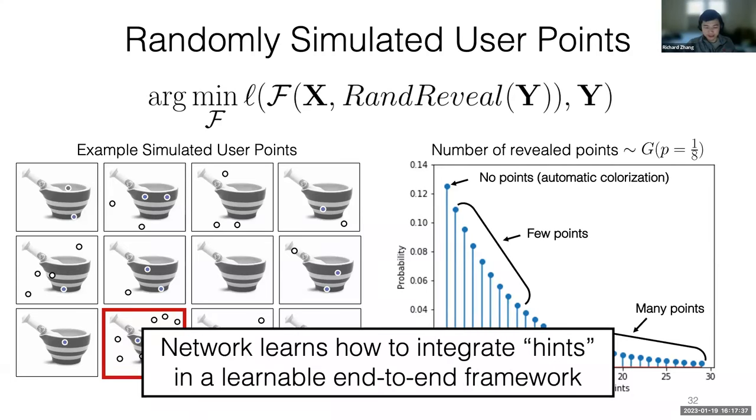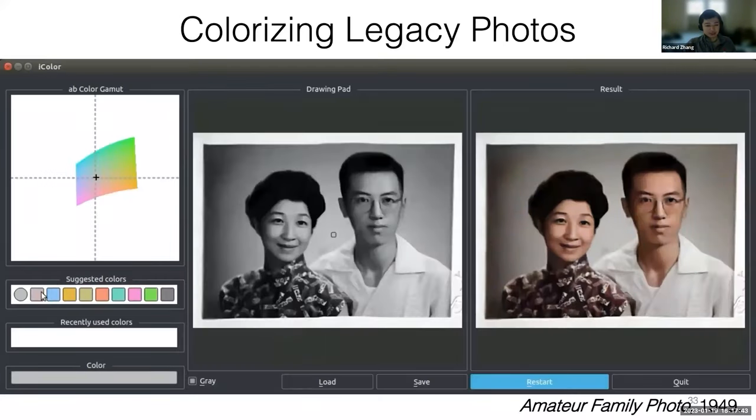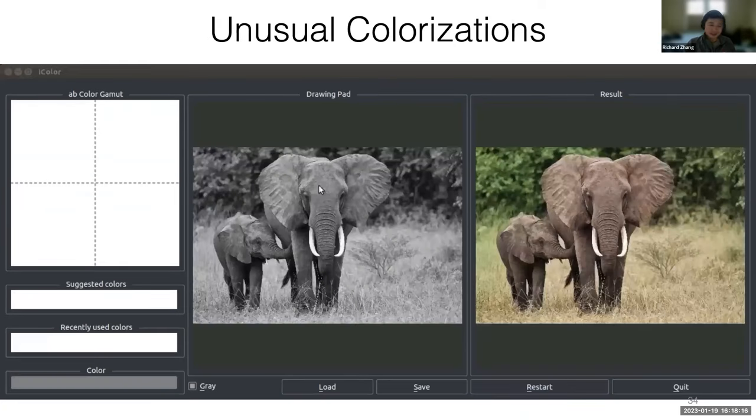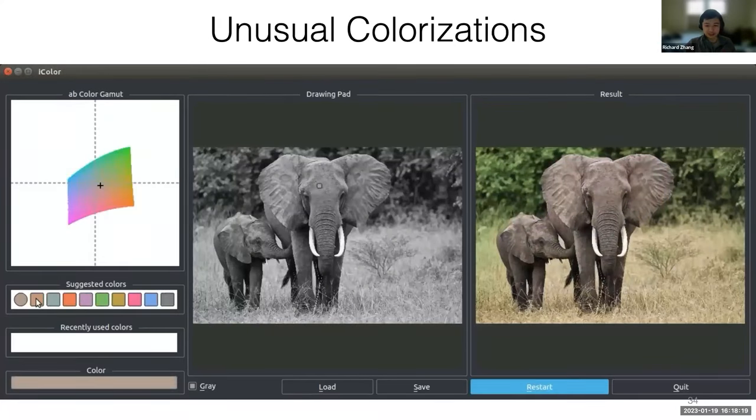It's able to integrate these hints in a learnable end-to-end framework. Here's the system trying on some legacy black and white photos. This is a picture of my grandparents. We can adjust the background color and the color of my grandmother's shirt here. My grandparents really appreciate this. Actually, after we released the paper, I put these results online. At some point I was reviewing a paper and suddenly this picture of my grandparents came up. I was just really shocked. So this picture propagated a little bit around as well.